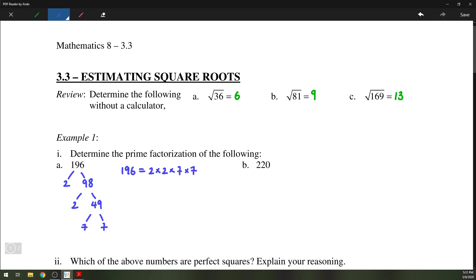Likewise for 220, we can divide by 2, so we get 110. We can divide by 2 again because 110 is even. We are left with 55, which is divisible by 5, and we're left with 11. So 220 equals 2 times 2 times 5 times 11.